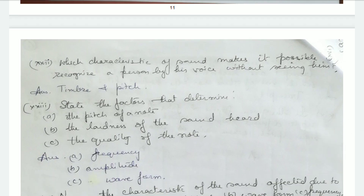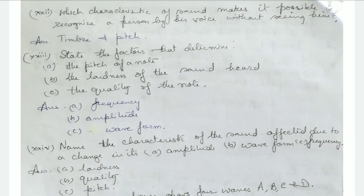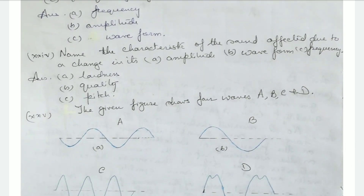Which characteristic of sound makes it possible to recognize a person by his voice without seeing him? That is timbre and pitch — timbre is the quality of sound, and pitch distinguishes shrill from flat sound. State the factors that determine pitch: frequency. The loudness of sound is determined by amplitude, and the quality of the note is determined by waveform.